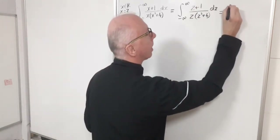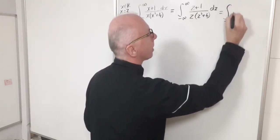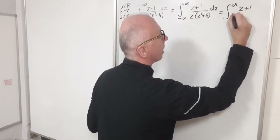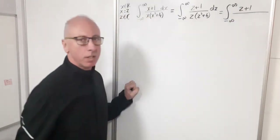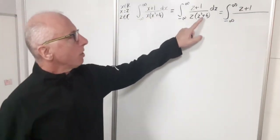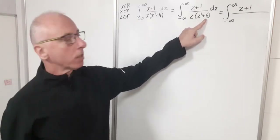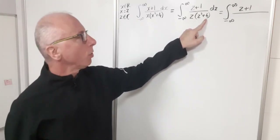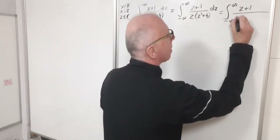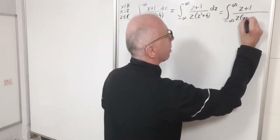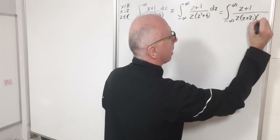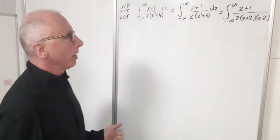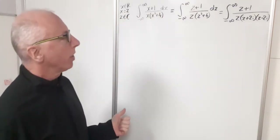Let's completely factor the denominator in terms of complex analysis. We have the integral from negative infinity to infinity of (z+1) over the fully factored denominator. For z²+4, we use difference of two squares with complex numbers, giving us z times (z+2i) times (z-2i).